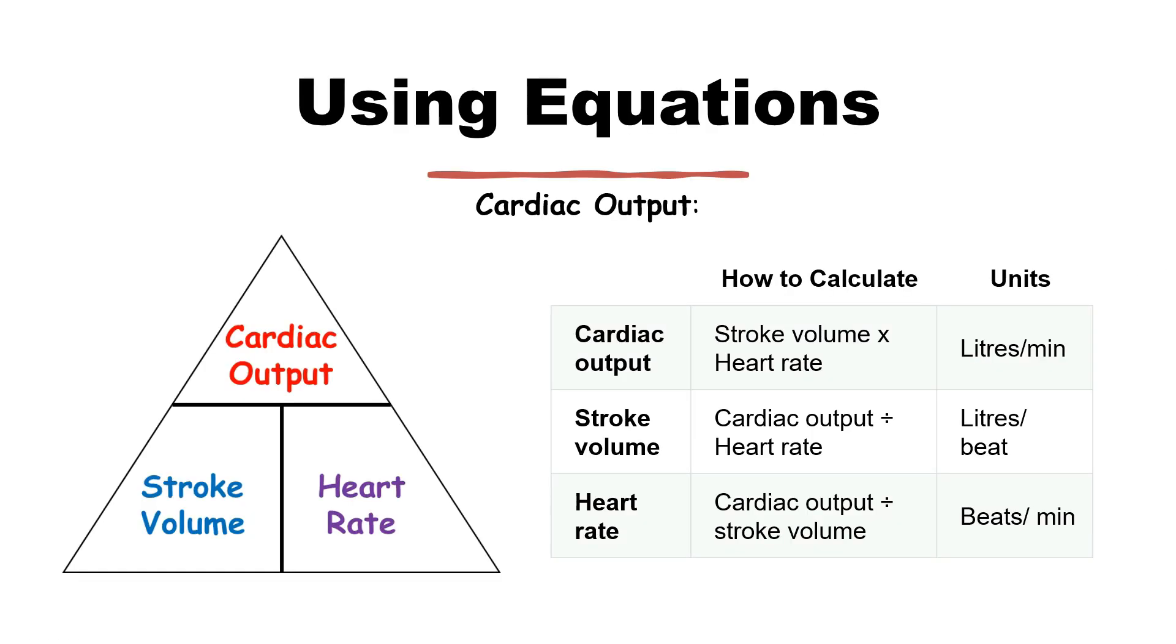Using equations. So you might be asked, you more than likely would be given these equations. So cardiac output, for example, heart rate, you might need to work out beats per minute. So that would be the cardiac output divided by the stroke volume. If you want to work out the cardiac output, it's the stroke volume times the heart rate.